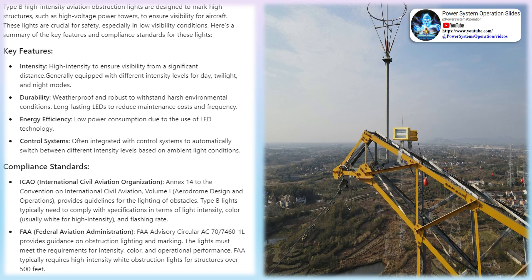There are three types of medium-intensity obstruction lights. Type A is a white flash with an effective light intensity of 20,000 candelas to 2,000 candelas, used for buildings and facilities above 105 meters and obstacles with strong background light, used with high-intensity B-type light dimming.